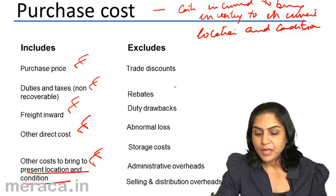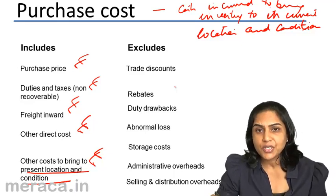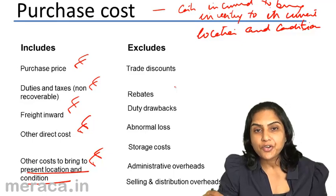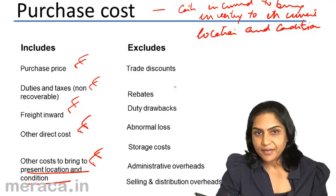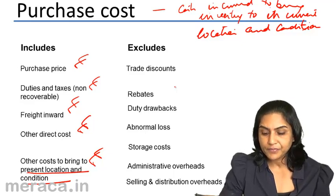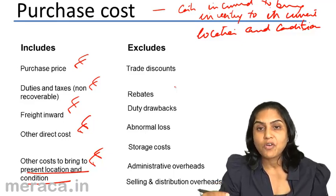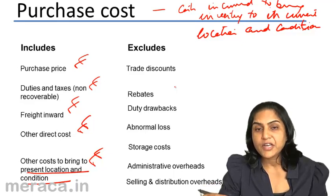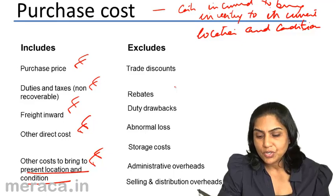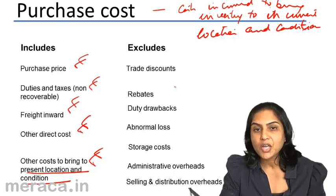Duty drawbacks: suppose we pay a duty while we import a commodity, and if we use this commodity to make another finished product which we then export, we may get a duty drawback or a refund of the duty which we paid earlier. In that case, it would not form a part of the cost of the material. Any abnormal loss does not form a part of the cost of inventory. Inventory is valued at the normal cost, and costs incurred due to abnormal conditions would not be taken as part of the purchase cost.